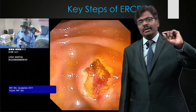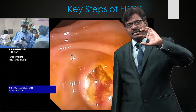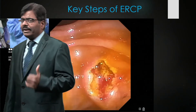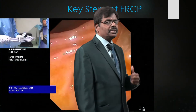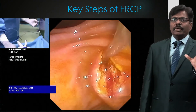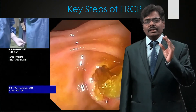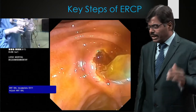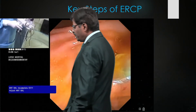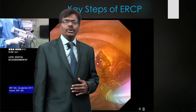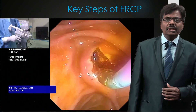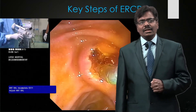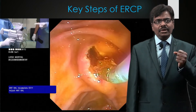I pass the CRE balloon over the guidewire — three-quarters inside the duct, one-quarter outside — attached to an Allis gun and inflate it under pressure. At a given atmospheric pressure, I know the size being achieved. This patient has a duct of about 10-11 mm, so I will not dilate beyond that. The balloon is now just in position.